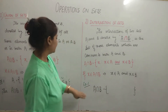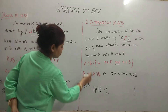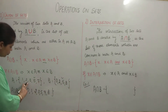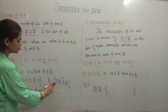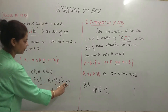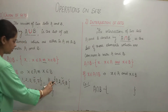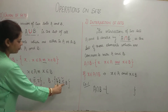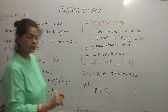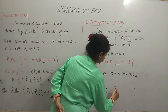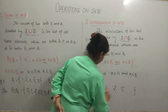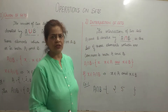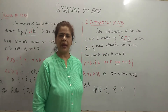Let us understand this operation again with the help of an example. We have taken A = {1, 2, 3, 5, 7} and B = {0, 2, 5, 8}. Then A intersection B means the common elements: 2 and 5. These are the two elements which both A and B have. So A intersection B is a set having two elements only — 2 and 5.